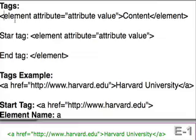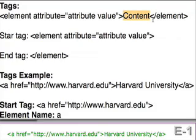Here we can see a sample tag that I have written out. First there is an angle bracket — this defines the beginning of a tag. Next is an element name, followed by its attribute, equal sign, then in quotes the attribute values, and then another angle bracket to close the tag. Followed by that is content, another angle bracket, a slash, and then finally the element name.